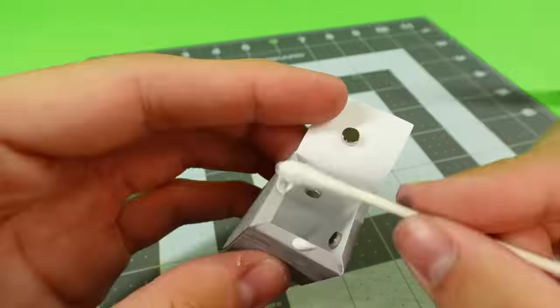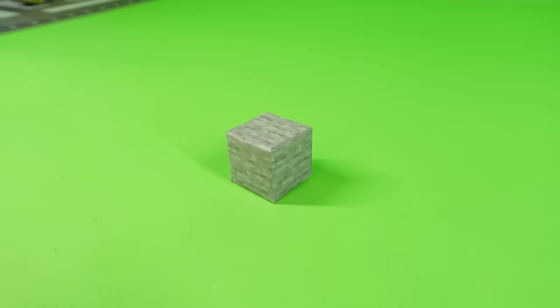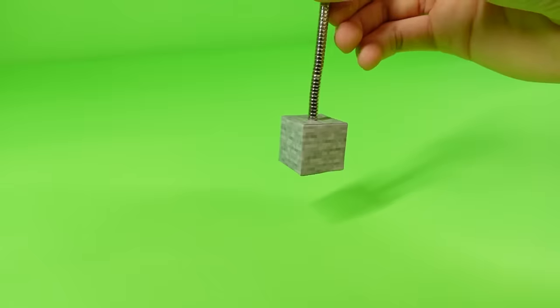Finally, glue the flaps on the top, fold it down, and use your finger to flatten it out, and do the same on the bottom. Boom! There is your very own magnetic paper Minecraft block.